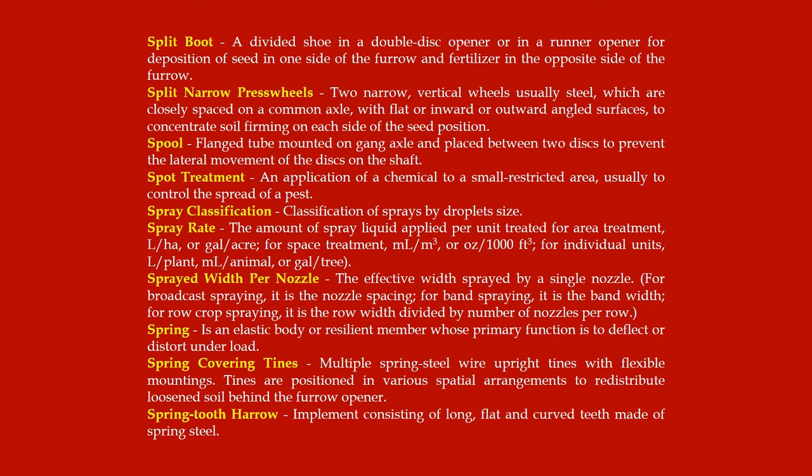Spray classification: classification of sprays by droplet size. Spray rate: the amount of spray liquid applied per unit treated area; for area treatment: liters per hectare or gallons per acre; for space treatment: milliliters per cubic meter or oz per 1000 cubic feet; for individual units: liters per plant, milliliters per animal, or gallons per tree.